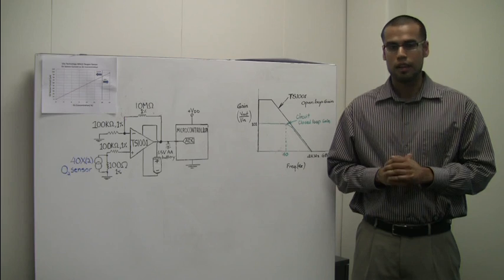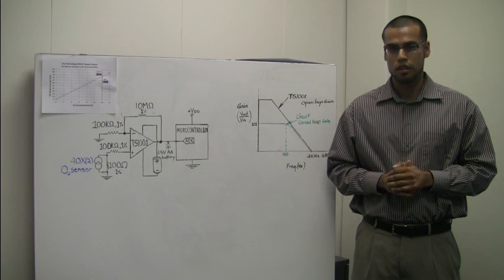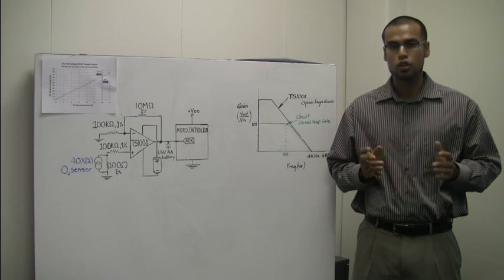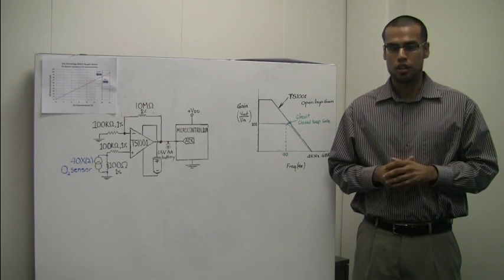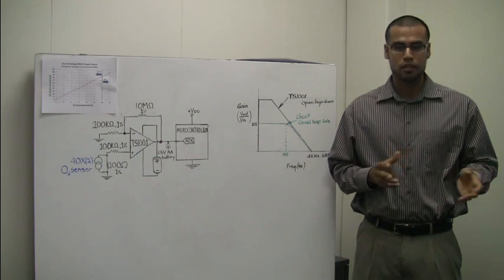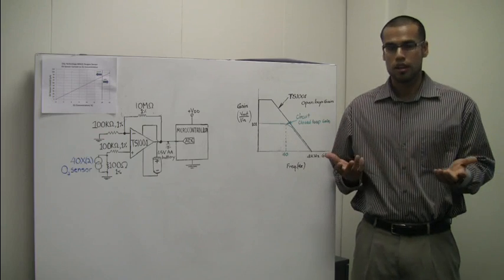Oxygen sensors are commonly found in life safety and industrial applications. In life safety applications, they are used to ensure that adequate levels of oxygen are available in a confined space, such as inside an aircraft or inside a room such as this one.